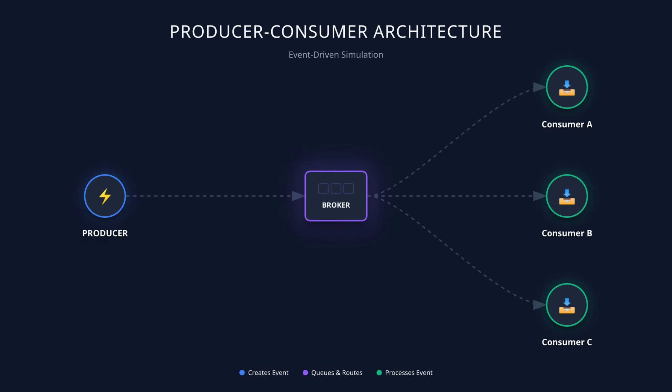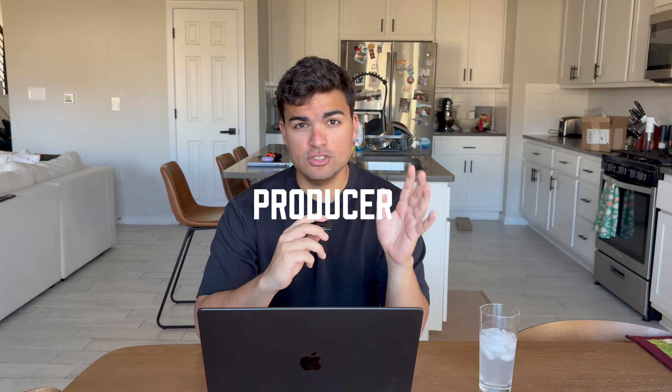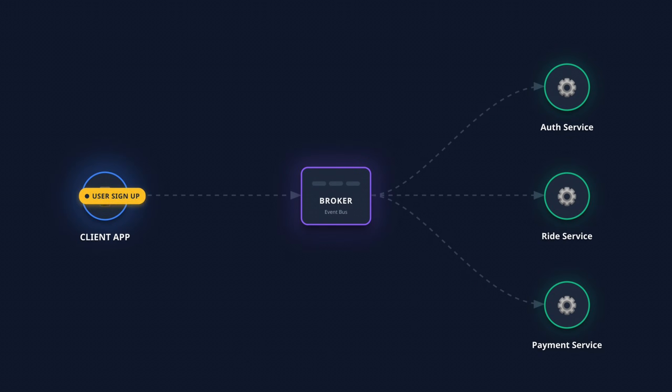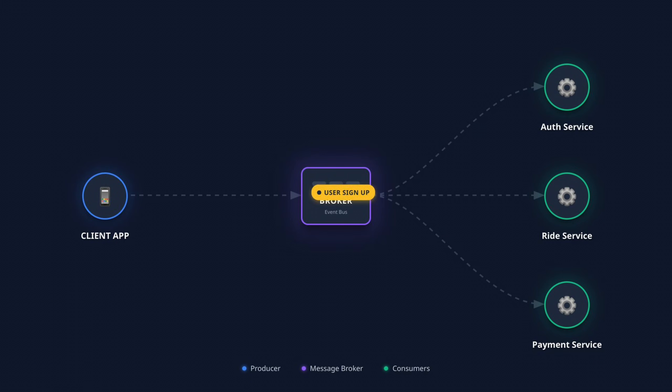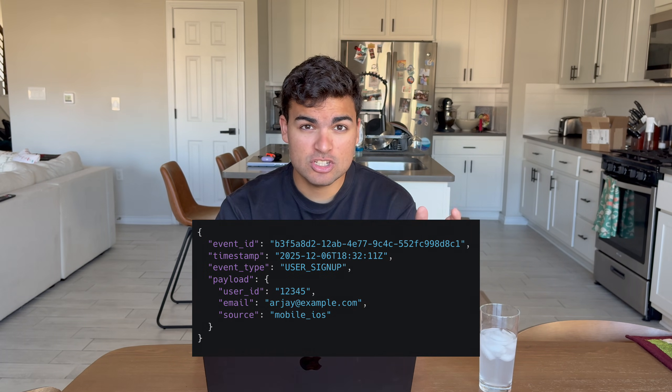Instead of calling other services directly, one service will send out an event. It follows a simple three-part pattern. Number one: the producer. This is a service where something happens — maybe a user signs up, somebody requests a ride, somebody makes a checkout request, or maybe a payment fails. The producer does not make an API call to another service to immediately handle this. Instead, it will publish an event to a broker. The event itself is a lightweight message that describes exactly what happened.